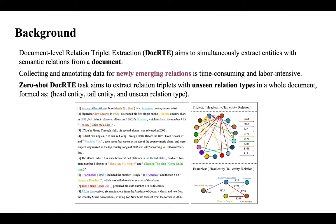As shown in the figure, document-level relation triplet extraction task aims to extract entities with thematic relations from a document. However, collecting and annotating data for new relations is time-consuming and labor-intensive.